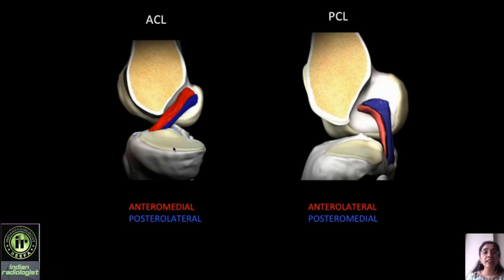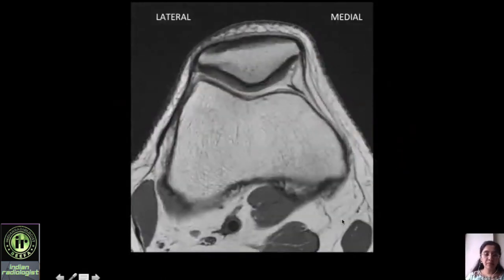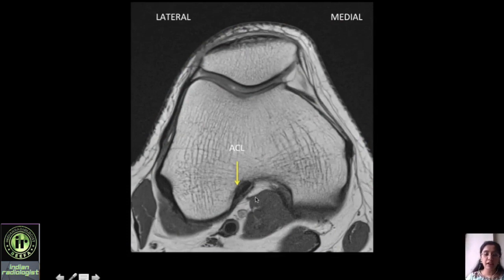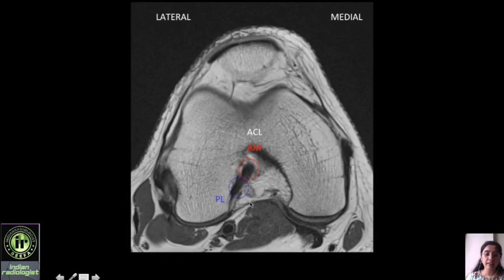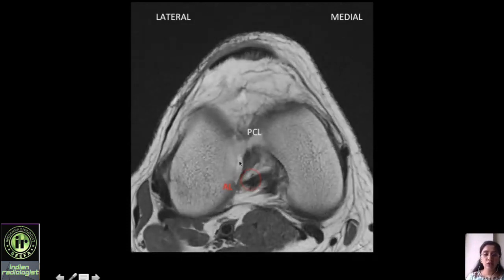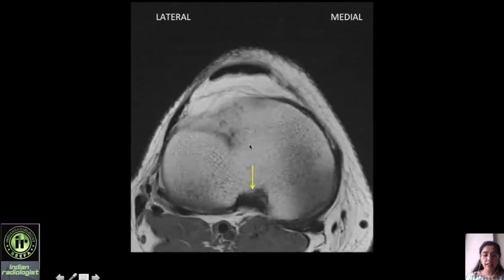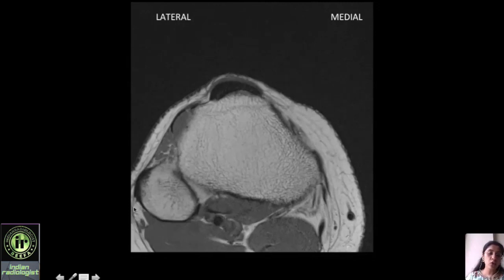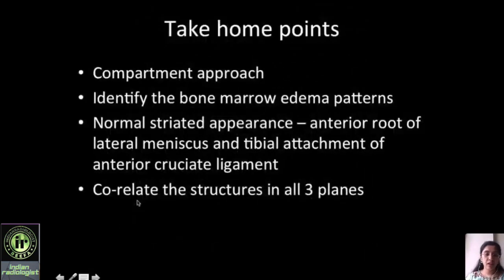Both cruciate ligaments comprise two bundles, and it is important to identify each because single-bundle injuries are common. A helpful mnemonic is AMPLE: the ACL comprises the anteromedial and posterolateral bundles — invert that and you have the anterolateral and posteromedial bundles for the PCL. Going from cranial to caudal, you can appreciate the femoral attachment of the ACL with its anteromedial and posterolateral bundles, and the femoral attachment of the PCL with its anterolateral and posteromedial bundles. At the tibial attachments of both ACL and PCL, the popliteal vessels, tibial nerve, and common peroneal nerve can be appreciated posteriorly.